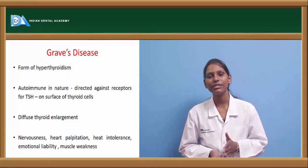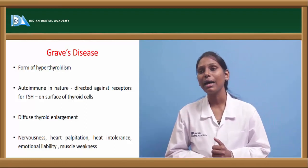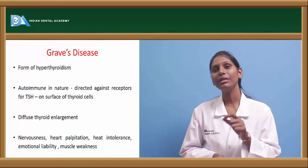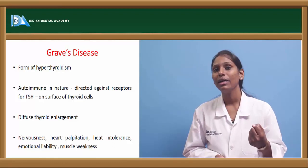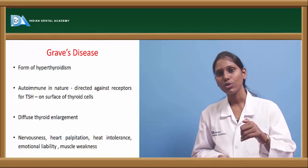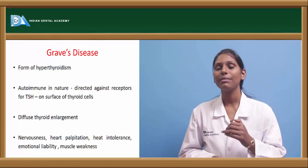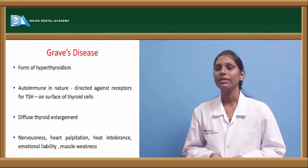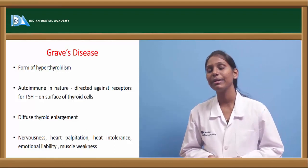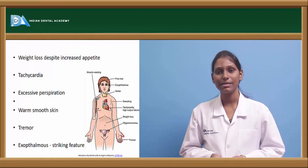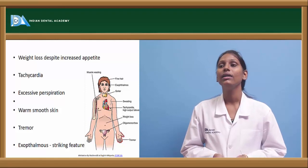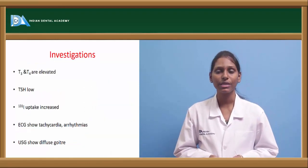Graves' disease is a form of hyperthyroidism that is autoimmune in nature. Autoantibodies are directed against the TSH receptors on the surface of thyroid cells, so the thyroid stimulating hormone receptors are not functioning properly. This leads to diffuse thyroid enlargement with clinical signs such as nervousness, heart palpitations, heat intolerance, emotional lability, muscle weakness, weight loss despite increased appetite, excessive perspiration, tachycardia, warm and smooth skin, tremors, and exophthalmos.